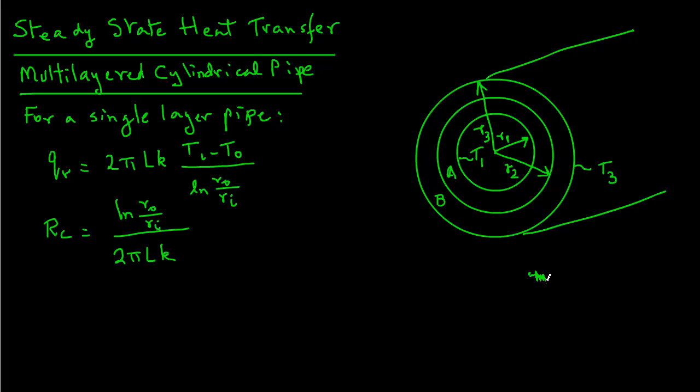So we have one resistance depicting the inside wall. So we will call that R thermal resistance for the material A. And another resistance which is for the outside material RB.